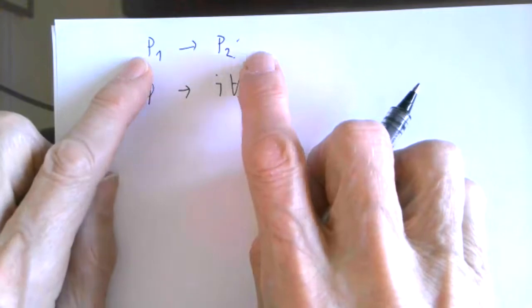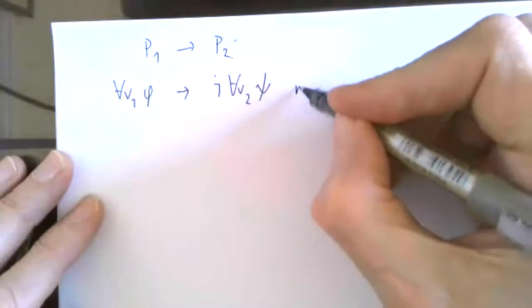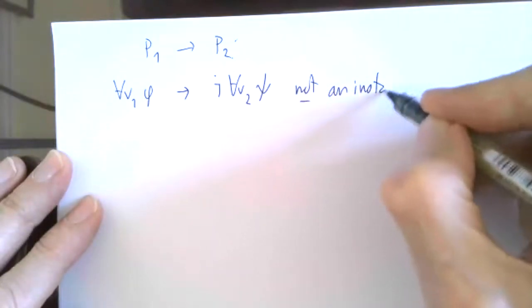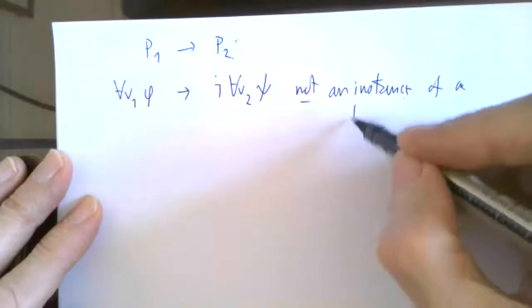It may be that this is true and this is false, in which case the whole thing is false, so this is not an instance of a tautology.